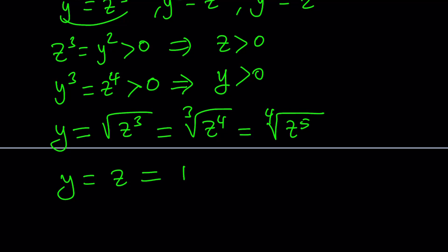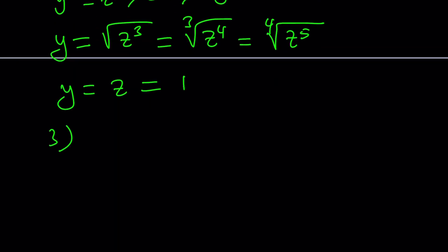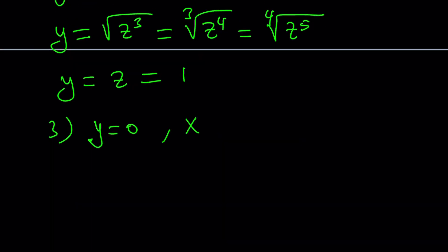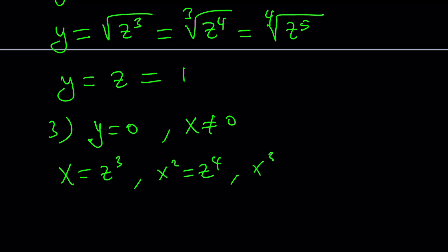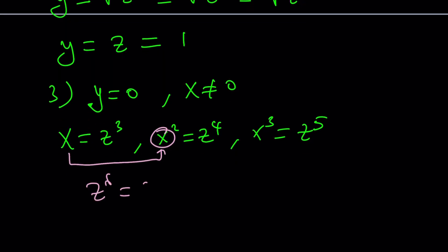The third case is basically the reverse: y equals zero and x does not equal zero. If y is zero, we can immediately write x equals z cubed, x squared equals z to the fourth, and x cubed equals z to the fifth. We can substitute x: replacing x with z cubed gives us z to the sixth equals z to the fourth, and z to the ninth equals z to the fifth.